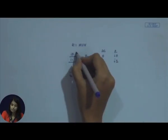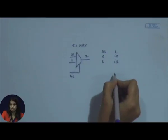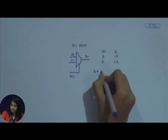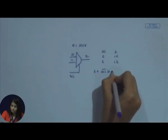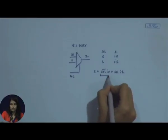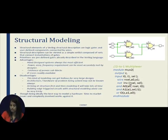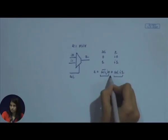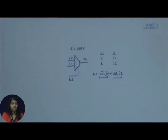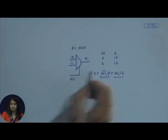If you know digital design, this functionality can be represented using a Boolean equation: z = select_bar AND i0 OR select AND i1. If you see the code in the slide, we directly represent this Boolean equation in the form of logic gates. We have one NOT in the equation, two ANDs, and one OR. So we use two AND gates, one OR gate, and one NOT gate for the select line in the multiplexer design.